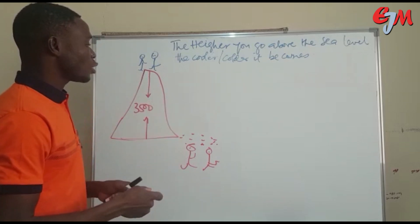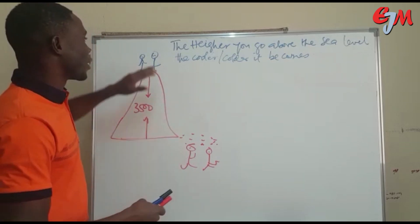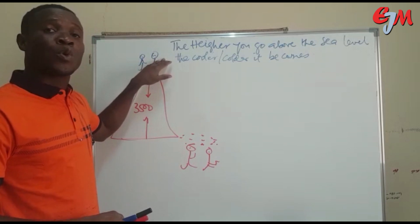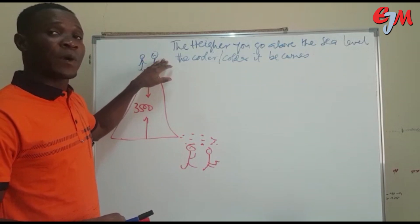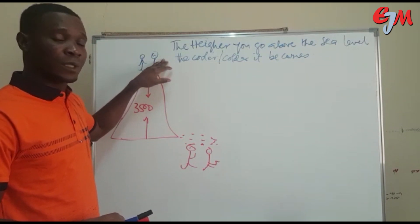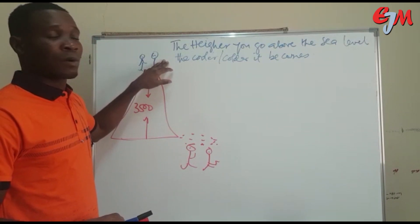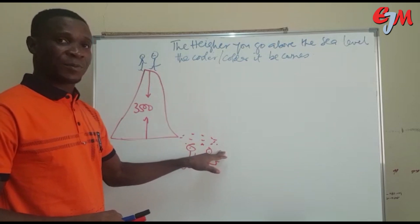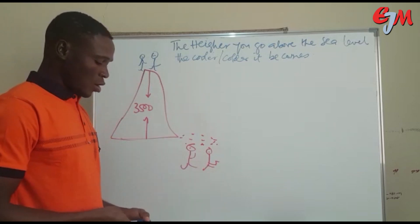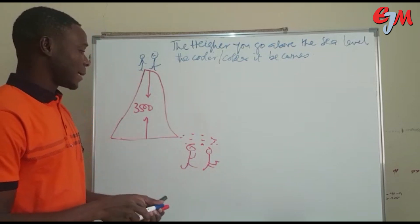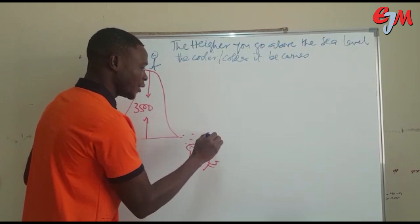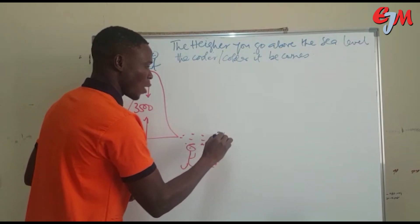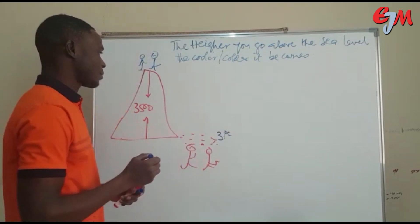Now we want to know if those on top are experiencing cooler weather or not — if the weather up there is colder than what the people at the bottom are experiencing. Let us give the temperature at the base one degree Celsius, for instance.